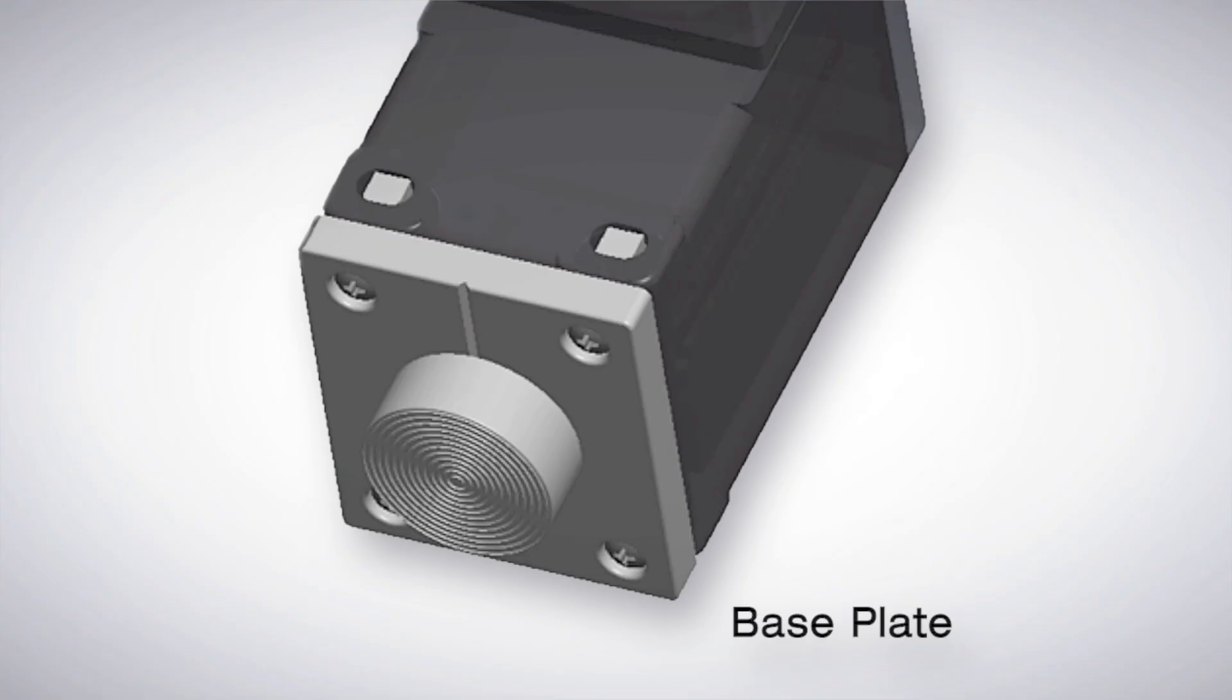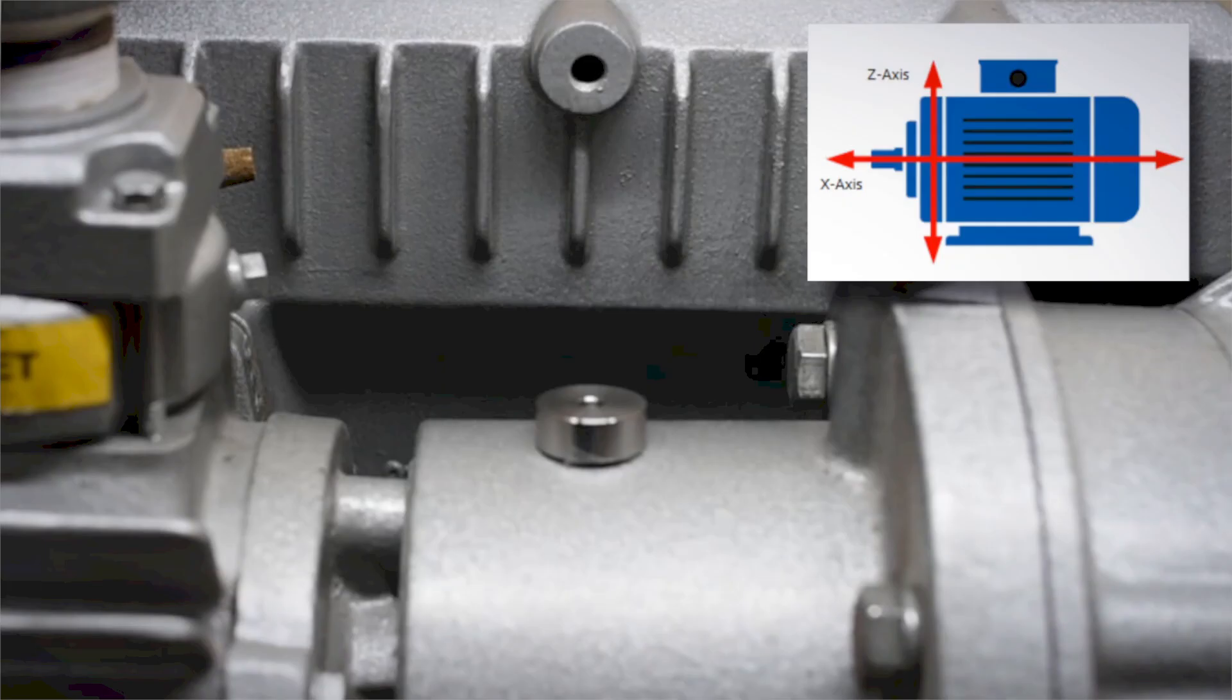Next, apply any recommended adhesive to the spiral side of the disc. Then place it on the chosen surface. Ensure that the mark on the disc is in line with the motor shaft.